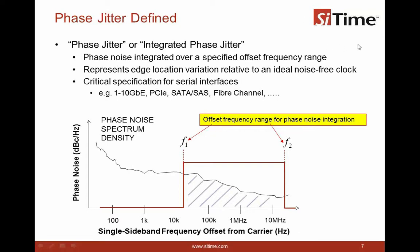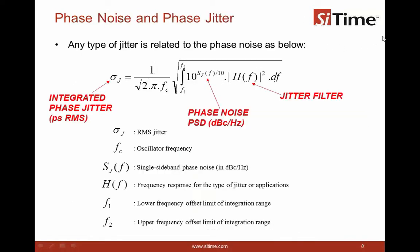So, let's move on to the next slide. Here, I'm showing a formula, which I don't intend to go through it. All it's supposed to show is that the phase noise, which is shown as Sj of F, and the right side of the formula basically defines the phase jitter for different types of applications.